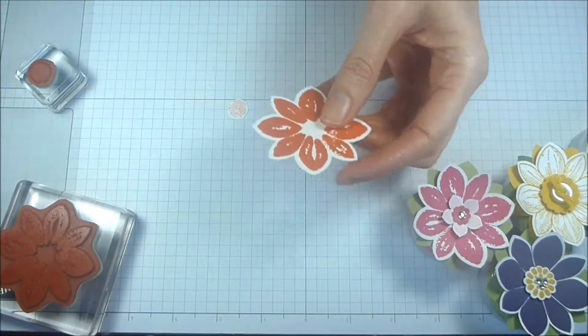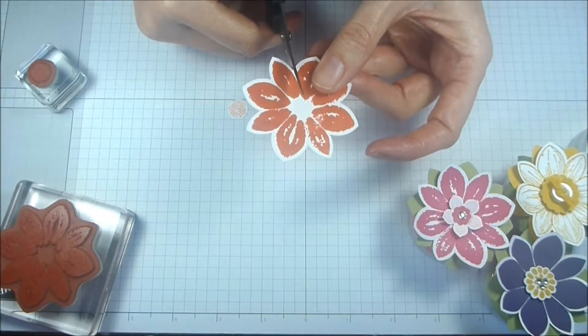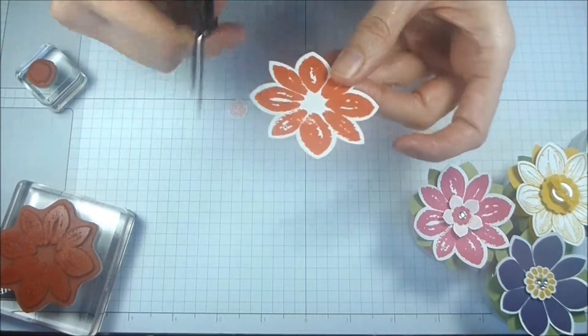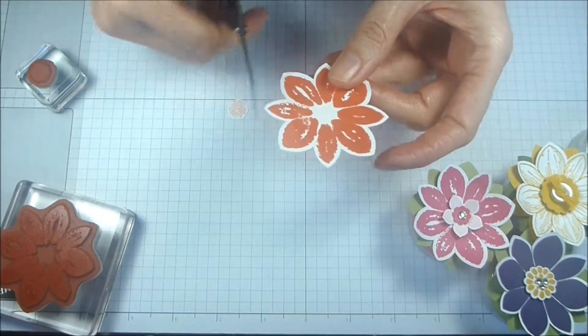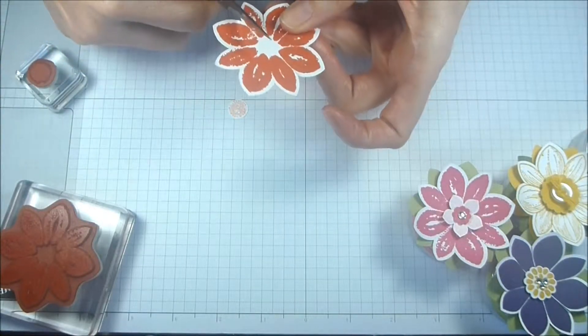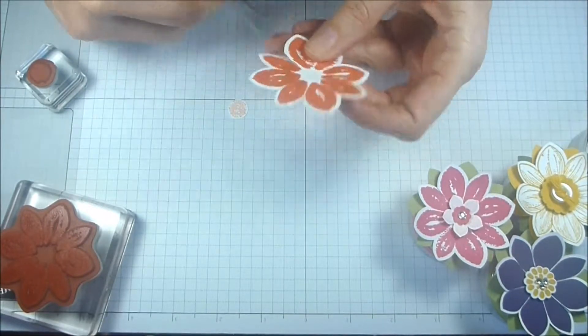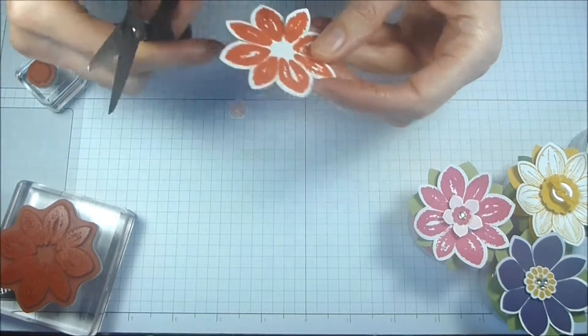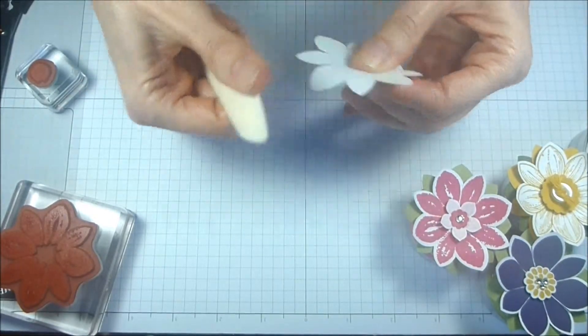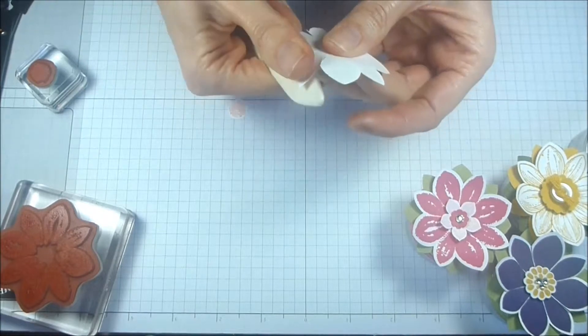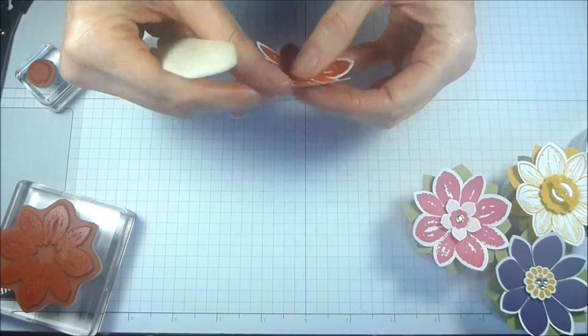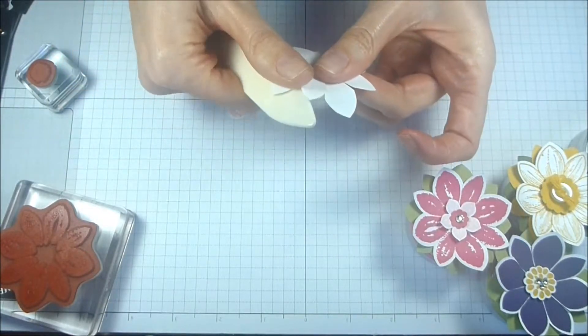So the next step is what I do is I cut up each petal, because I want to actually curl them. I really wanted a 3D effect. It doesn't take long. I'm almost done. And then what you do is you take your bone folder and you curl them. You can curl them up or down. It doesn't matter. I'm going to curl them up. Just like this. And you can curl them as much or as little as you want.